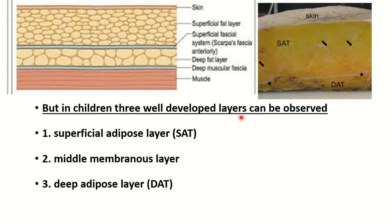But in children, three well-defined layers are observed: the superficial adipose layer, the middle membranous layer, and the deep adipose layer. This is the superficial adipose layer, this white line is the middle membranous layer, and this is the deep adipose layer.